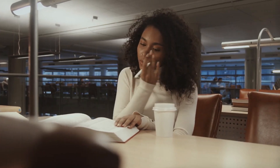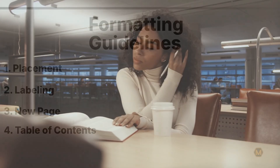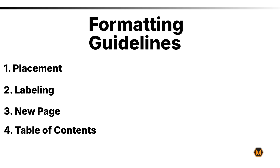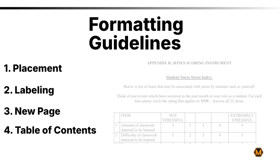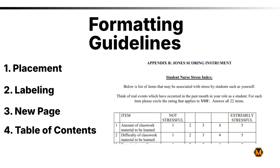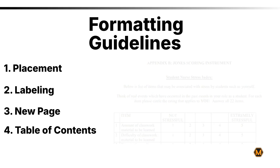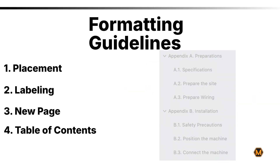When it comes to formatting your appendix, here are some guidelines to follow. Placement — the appendix should be placed at the very end of your paper, right after your references. Labelling — each appendix needs to be clearly labeled with a title and either numbered or lettered, like Appendix A, Appendix B, etc.